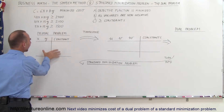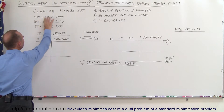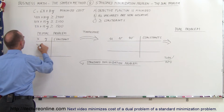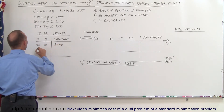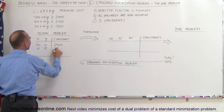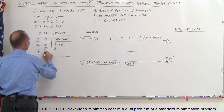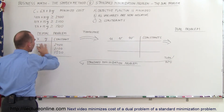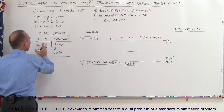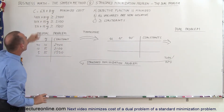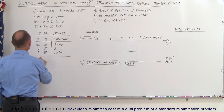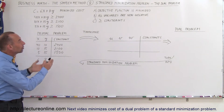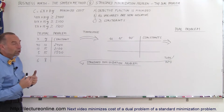First of all, we're going to write down the primal problem. We write down the x and y variables of the three constraints and put the constants on the right side. So here we end up with 40 and 10, and the constant is 2400. Here we have 10 and 15, and this is 2100. Here we have 5 and 15, and 1500. These are the constrained inequalities — the coefficients for x and y and the constants. Over here we write down the constrained equation: for x we have 6 and for y we have 8. So we're going to transpose this into a different simplex tableau to come up with a dual problem.